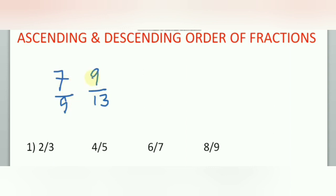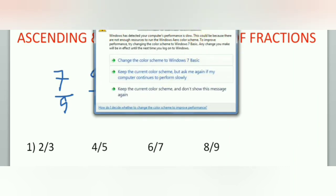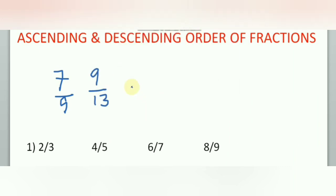One trick is cross multiplication: 13 into 7, and 9 into 9 — whichever product is higher, that numerator's fraction is greater. But that is very difficult in the case of double-digit numbers, for example 21 by 39. So here is a simpler trick.